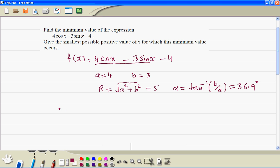So if we rewrite the function, it says 5 cosine x plus 36.9 degrees minus 4.